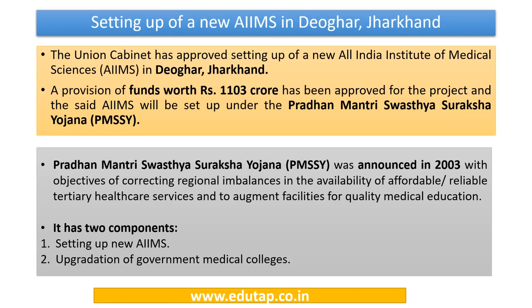The Union Government has also approved the setting up of a new AIIMS in Deoghar, Jharkhand, with funds worth Rs. 1,103 crores. This institution will be set up under the Pradhan Mantri Swasthya Suraksha Yojana, which was initially launched in 2003 to correct regional imbalances in the availability of quality medical education. The scheme has two components: setting up new AIIMS and upgrading government medical colleges.